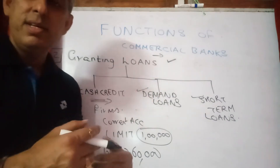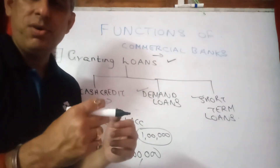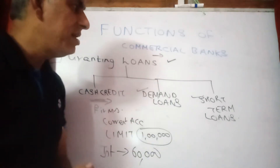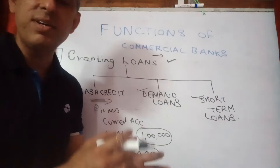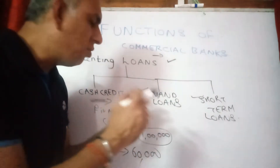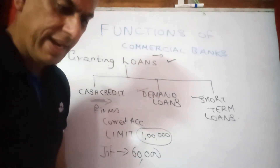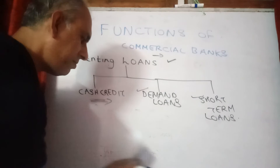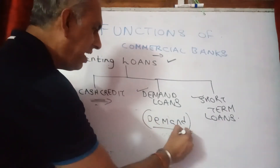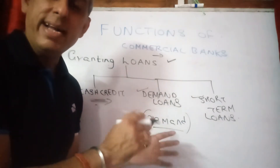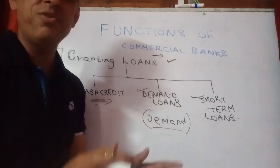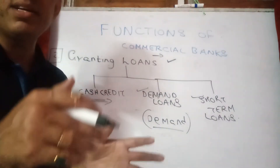Now, demand loans. Those firms or individuals who require money for very short arrangements — let's say, for example, a security broker, a share broker who is involved in purchasing and selling securities as a middleman — he requires money maybe for a few days or a few months. He will go to the bank and ask for this facility called demand loans. In demand loans, the money is given to the household or firm against demand, primarily to firms against demand. That means any time the bank wants its money back, they can ask for it, and therefore a stipulated time period is not generally associated with such a facility.